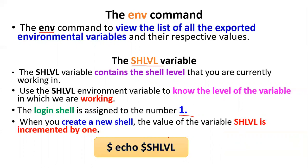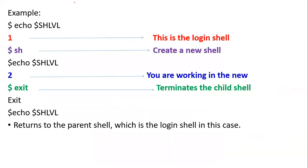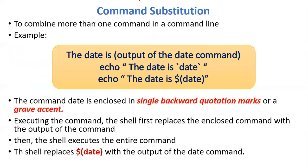For example, you can check the shell level using echo with the SHLVL variable, which shows level 1 for the login shell. When you create a new shell, the level increments. You can navigate to the new child shell and then terminate it to return to the parent shell, where the shell level returns to 1.